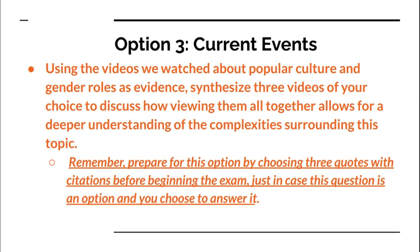Option number three has to do with some current events that we talked about. If this question is on the final and you choose to discuss it, you would use the videos that we watched about popular culture and gender roles — that's where you're going to be pulling your evidence. Using those, you're going to synthesize three videos of your choice to discuss how viewing them all together allows for a deeper understanding of the complexities surrounding this topic. For this option, you would need to have prepared by choosing three quotes with citations from these videos before beginning the exam, because you don't want to waste your valuable writing time looking up quotes. So definitely prepare by choosing one quote from each of three videos we watched about pop culture and gender roles.